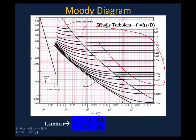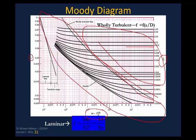Here is the Moody diagram. In the wholly turbulent flow section on the right, the value of F depends only on relative roughness because the lines are horizontal. In the curvilinear section, the friction factor is a function of both the Reynolds number and the relative roughness, so you pick a relative roughness line and follow the curve — you also need the Reynolds number to find where they intersect and read off F.